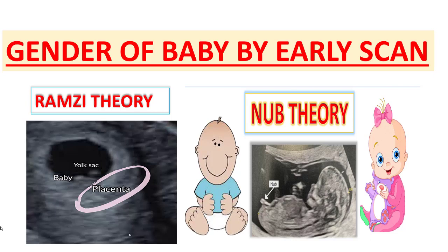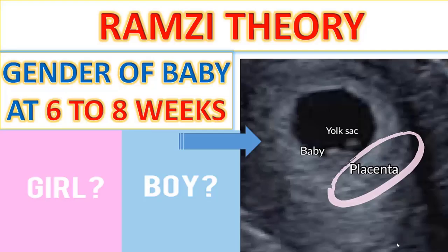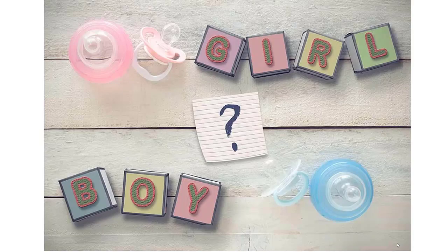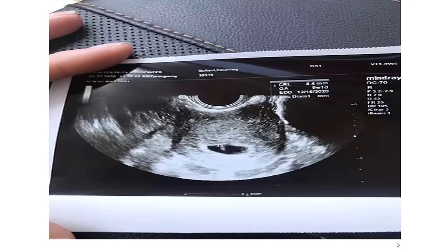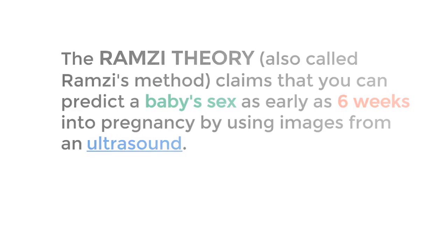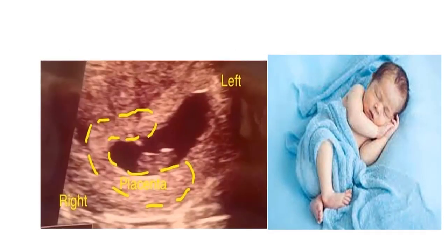First of all, we will talk about the Ramsey theory. So if you went to the doctor for your first ultrasound after pregnancy, then at early age, at 6 to 8 weeks, by using the Ramsey theory, you can predict the gender of your baby. The Ramsey theory claims that you can predict a baby's sex as early as 6 weeks into pregnancy by using images from an ultrasound. According to the theory, the placement of your developing placenta can reveal your baby's sex.